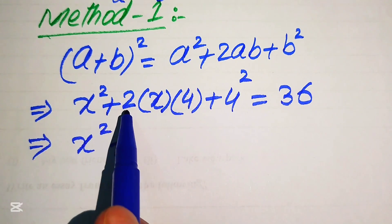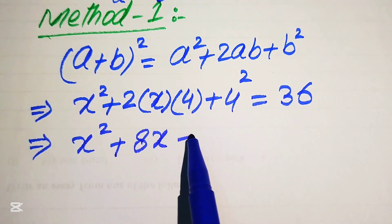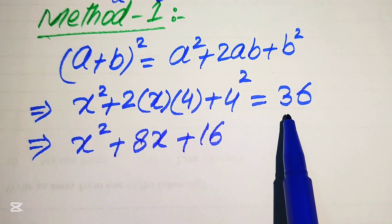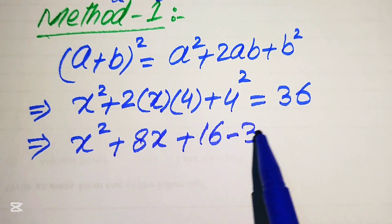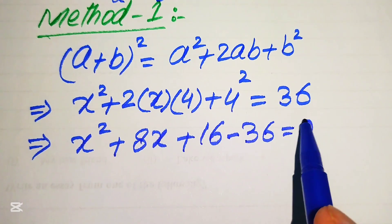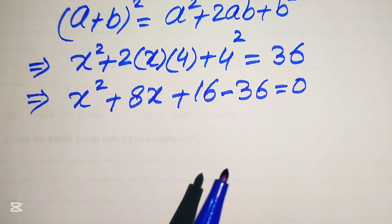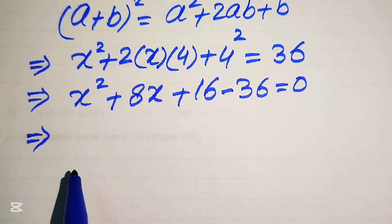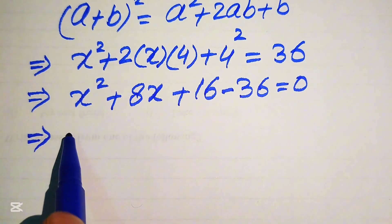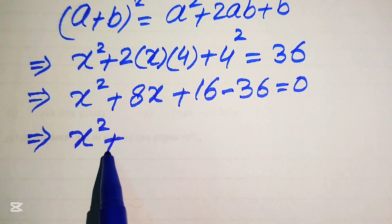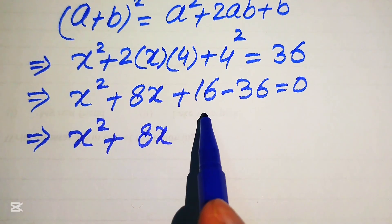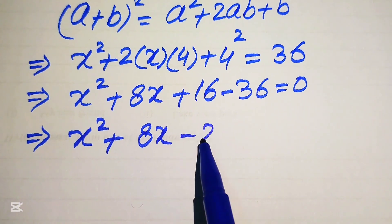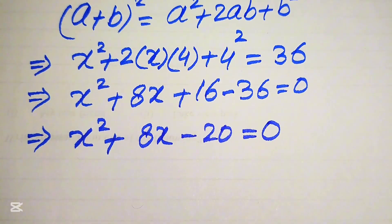Simplifying, we get x² + 8x + 16 = 36. Moving 36 to the left-hand side gives us x² + 8x + 16 − 36 = 0, which simplifies to x² + 8x − 20 = 0.